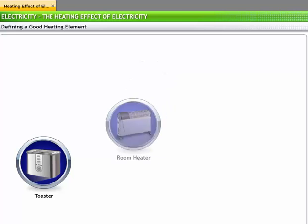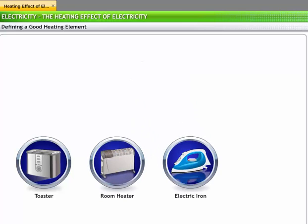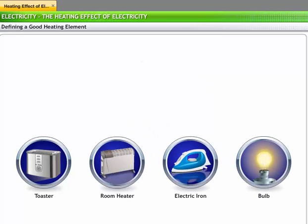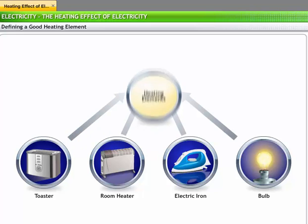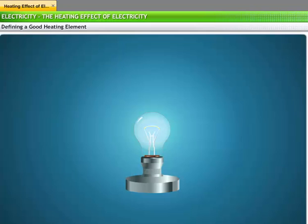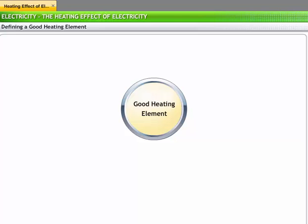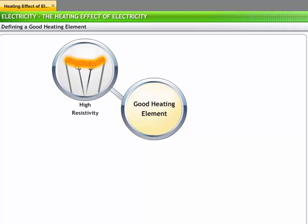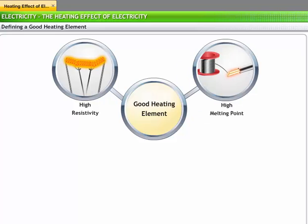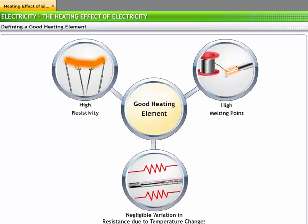Metallic conductors used in electrical heating appliances to convert electrical energy into heat are called heating elements. For example, the filament in a bulb is a heating element. A good heating element should have high resistivity so that it gets heated quickly, high melting point to enable it to withstand high temperature, and negligible variation in resistance due to temperature changes.